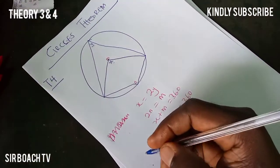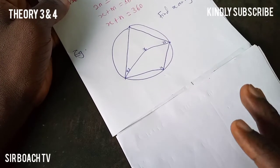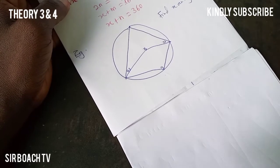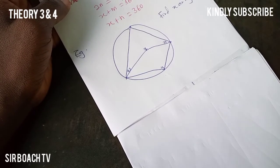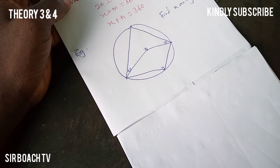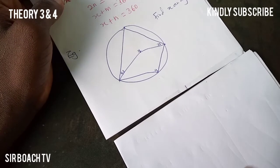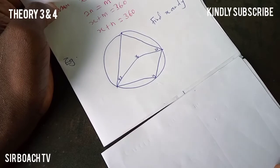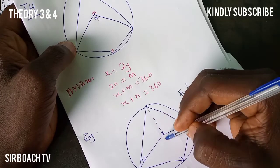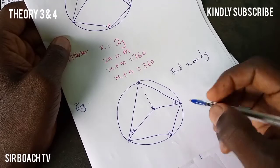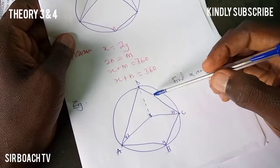We have this question — find X and Y. I'll use only one formula here, but a similar question came in the 2021 WASSCE which I solved two different ways. You can click the link above to watch that. Now, I can join a chord from here to this side. If I draw this chord, it makes an angle here. Let me label the points A, B, C, and D.